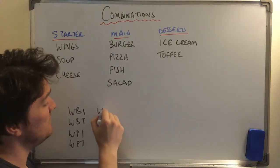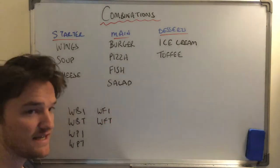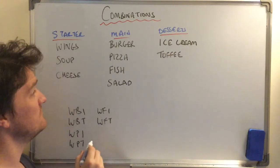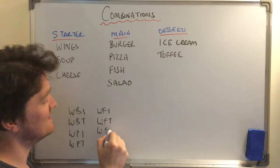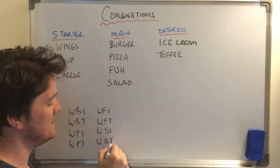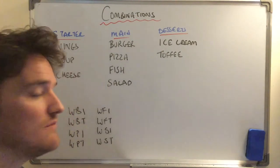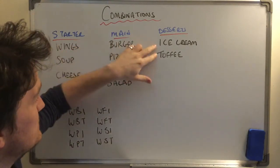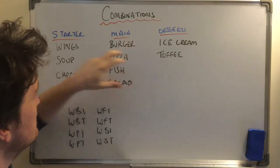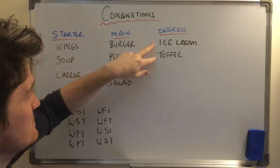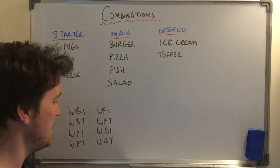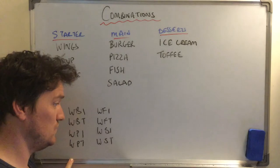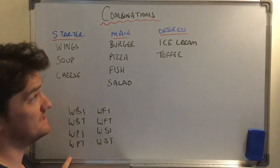The list goes on: WFI, WFT — that's wings with fish — then WSI, WST. What you might notice is I've done wings with burgers and desserts, wings with pizza and desserts, wings with fish and desserts, wings with salad and desserts. That's already eight options and I've only just done wings.